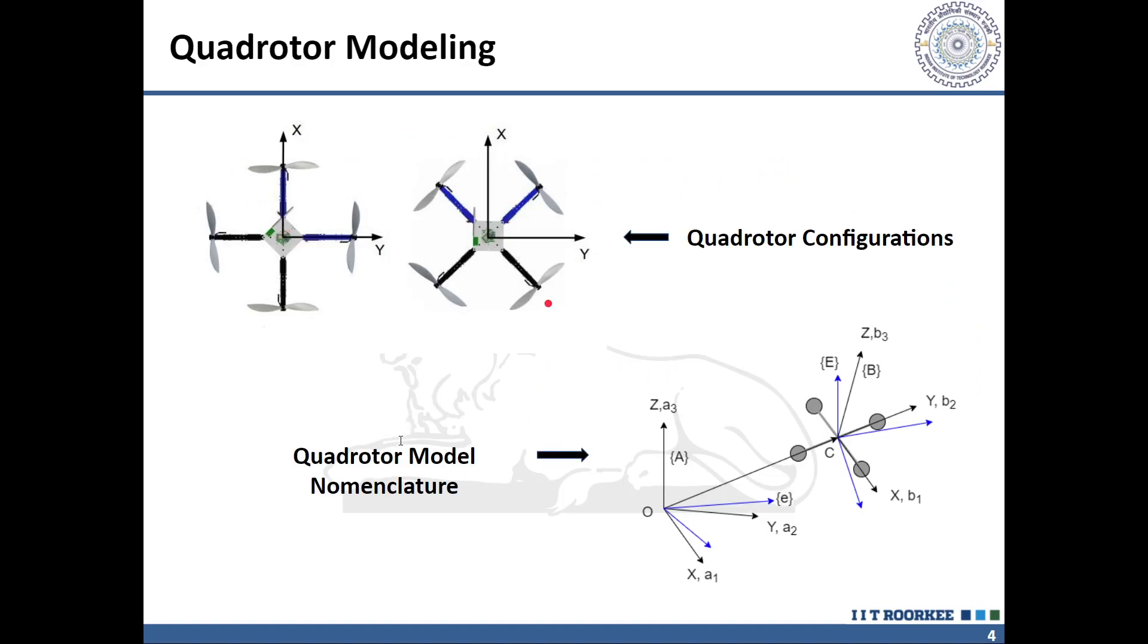A typical quadrotor looks like this. It has four rotors which propel using the onboard motor. The vehicle can have a plus or cross configuration, which is essentially just a way of deciding the convention system used while modeling. These four rotors spin in a particular configuration: two opposite rotors have the same but opposite direction spin compared to the remaining pair.